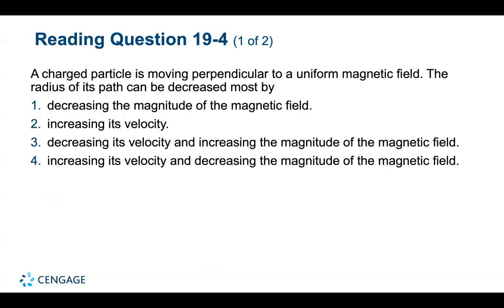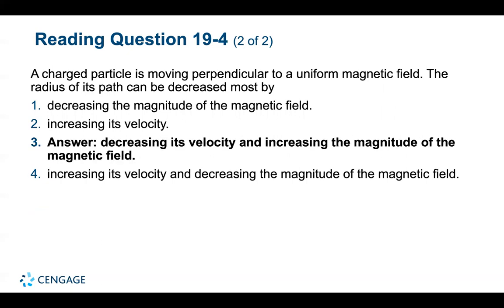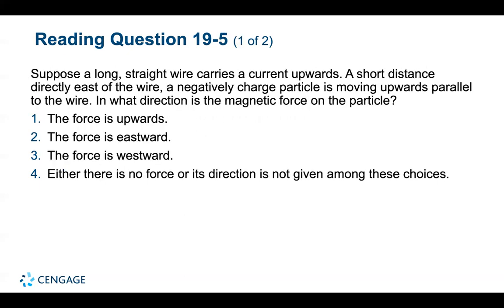Fourth: a charged particle moving perpendicular to a uniform magnetic field — the radius of its path can be decreased most by decreasing its velocity or increasing the magnitude of the magnetic field. Fifth: a long straight wire carries a current upward. A short distance directly east, a negatively charged particle is moving upward parallel to the wire. The magnetic force on the particle is eastward.